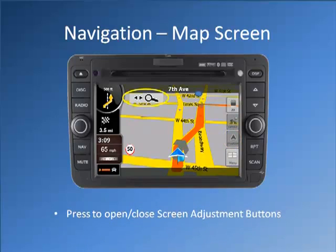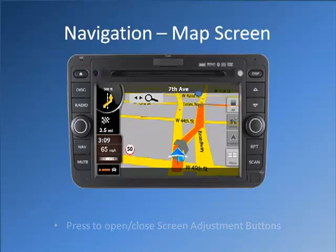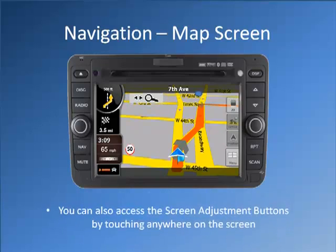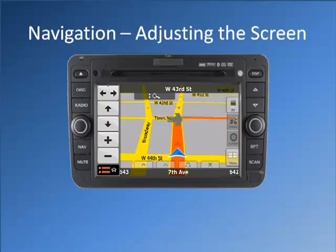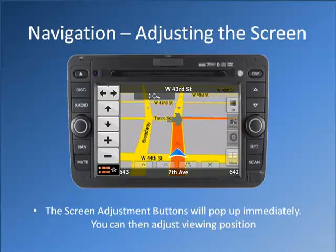Press to open or close the screen adjustment buttons. You can also access the screen adjustment buttons by touching anywhere on the screen. The screen adjustment buttons will pop up immediately. You can then adjust viewing position.